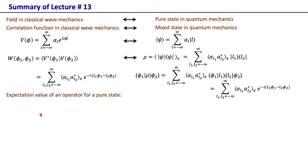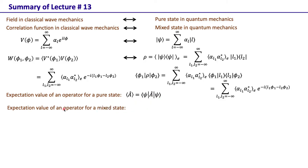The expectation value of an operator A for a pure state is ⟨ψ|A|ψ⟩, but for a mixed state the expectation value is the ensemble average of the expectation value, which equals the trace of ρ times A.